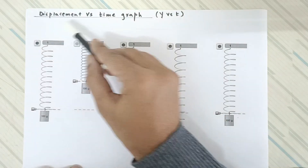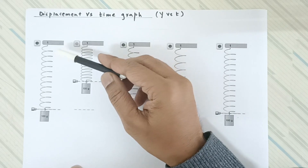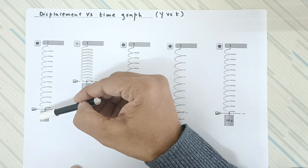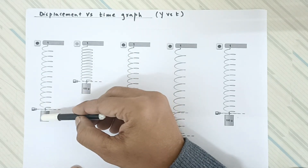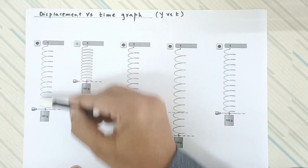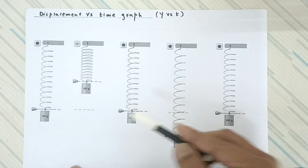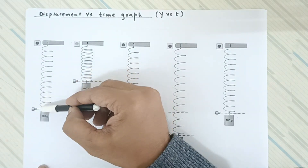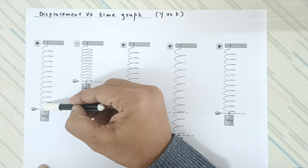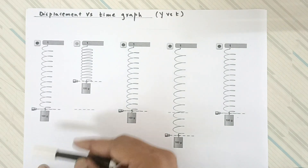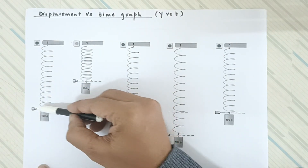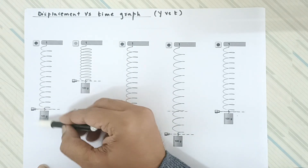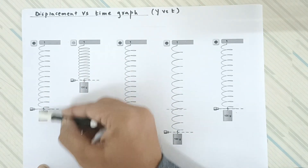In this video we are going to deal with the displacement-time graph of a simple harmonic oscillator. Here the spring-mass system acts as a simple harmonic oscillator. The oscillations take place along the y-axis. This mass oscillates under the effect of two forces: one is the weight, and the other is the spring force or the restoring force. This is the mean position wherein both forces are balanced, and by giving a little push, the mass starts oscillating up and down.